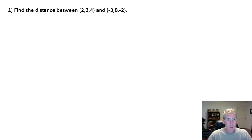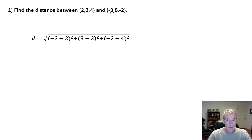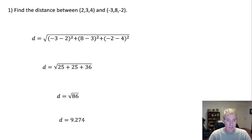Find the distance between two points which live in three-dimensional space. They always go in order x, then y, then z. So for the distance, you need negative 3 subtract 2, 8 subtract 3, and negative 2 subtract 4. Square each one and add it up: negative 5 squared is 25, 5 squared is 25, and negative 6 squared is 36. That gives the square root of 86, or approximately 9.274.